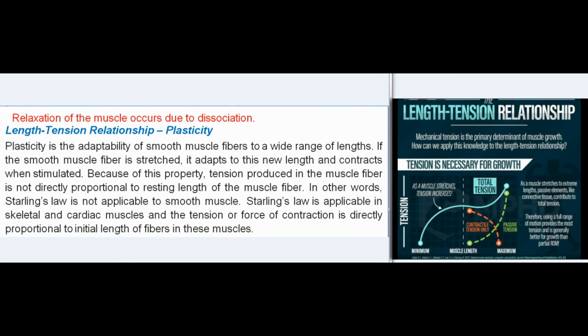Phosphorylated myosin gets attached to the actin molecule for a longer period — this is called the latch-bridge mechanism — and it is responsible for sustained contraction of the muscle with expenditure of little energy. Relaxation of the muscle occurs due to dissociation. Length-tension relationship, plasticity: plasticity is the adaptability of smooth muscle fibers to a wide range of lengths. If the smooth muscle fiber is stretched, it adapts to this new length and contracts when stimulated. Because of this property, tension produced is not directly proportional to resting length, meaning Starling's law is not applicable to smooth muscle.